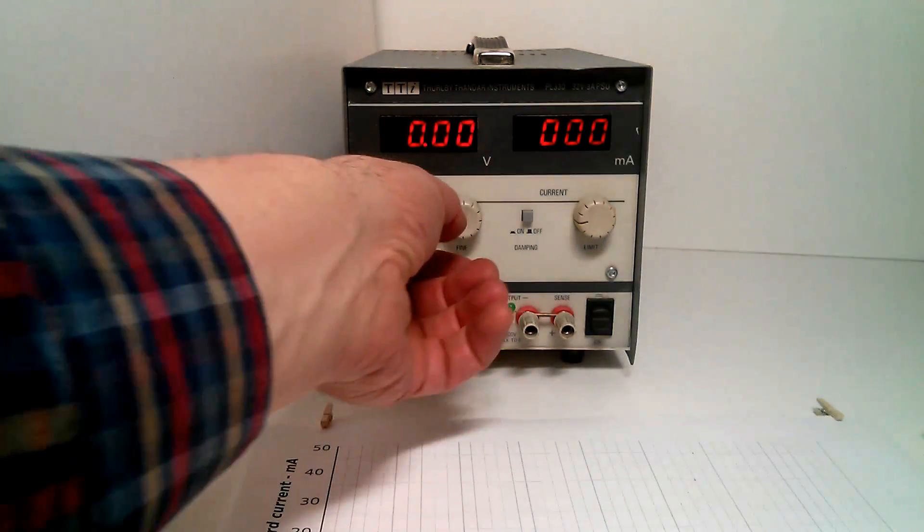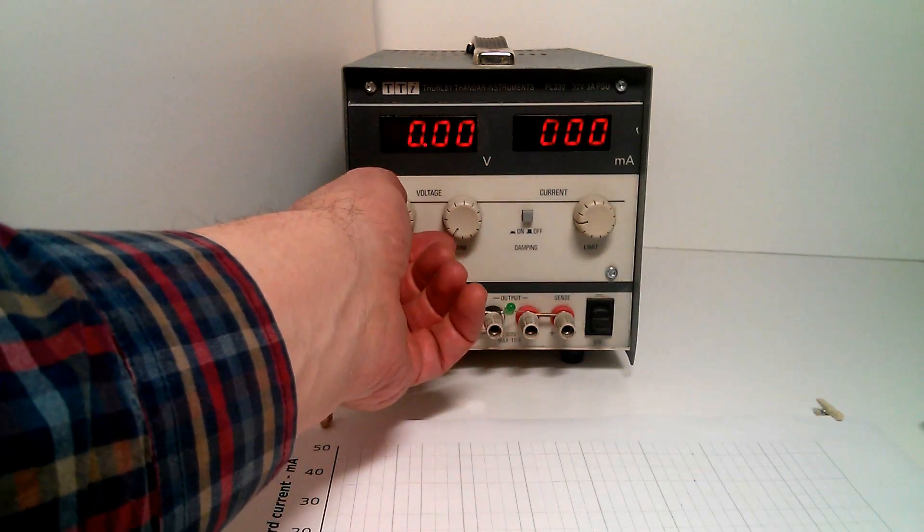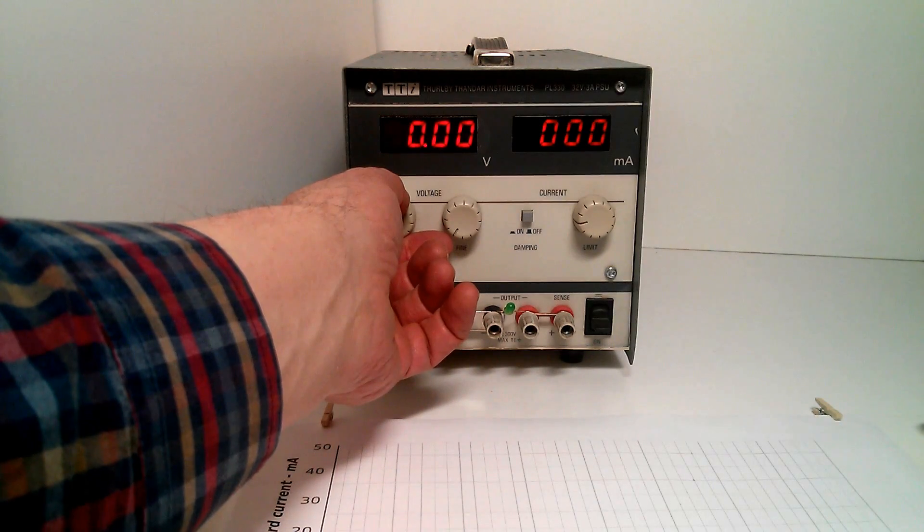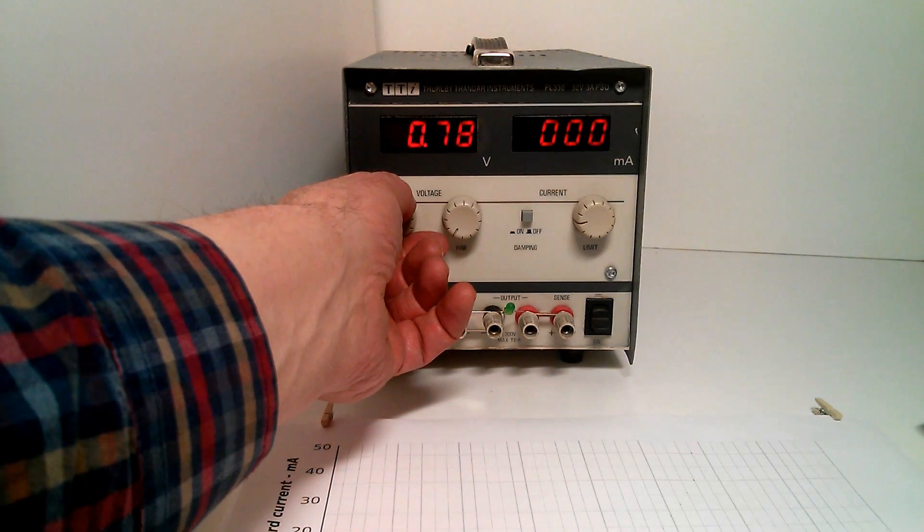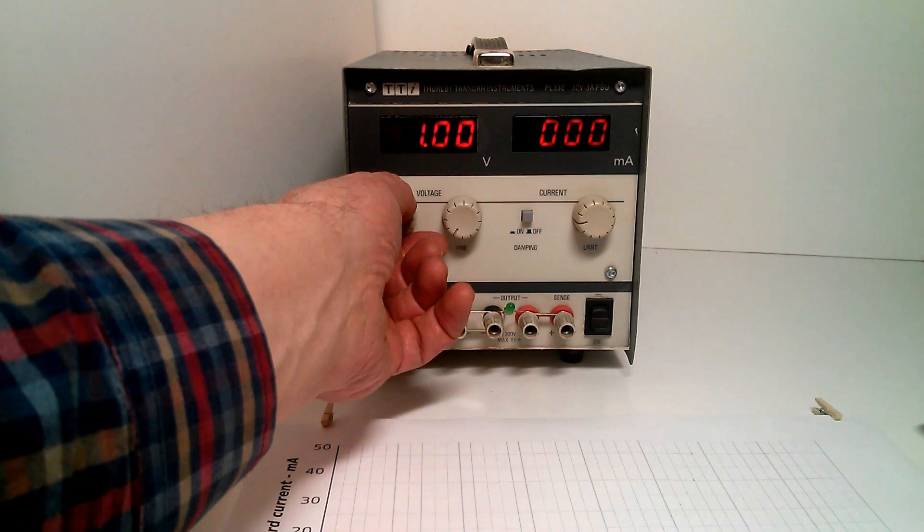If we now increase the voltage and go up towards one volt, we'll keep going till we get some sort of sensible change in the current. So as we approach one volt, we've still no significant current flowing.